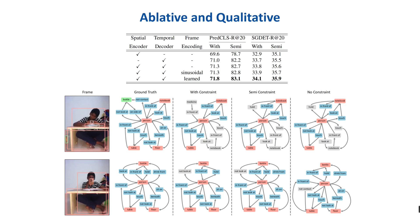When the spatial encoder and temporal decoder are both activated, STTran achieves the best performance with the learned frame encoding. And here are the qualitative results for dynamic scene graph generation.